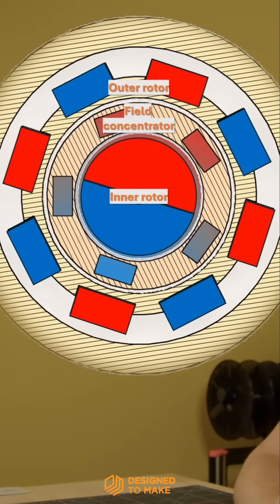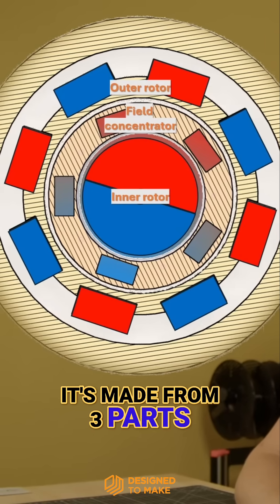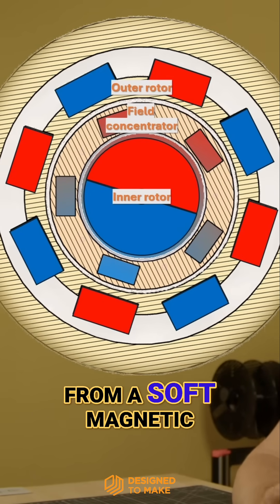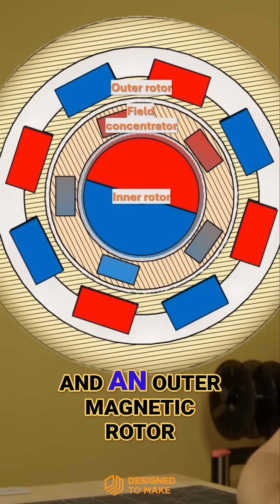How does a magnetic gear work? It's made from three parts: an inner magnetic rotor, a magnetic field concentrator made from a soft magnetic material like iron, and an outer magnetic rotor.